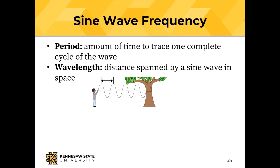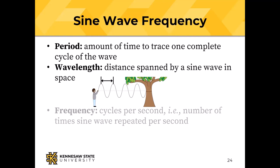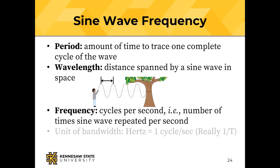Frequency is cycles per second — how many times the sine wave repeats. The unit of bandwidth is hertz, one cycle per second. We can count repetitions in one second to determine frequency.